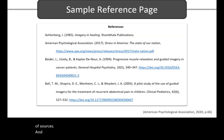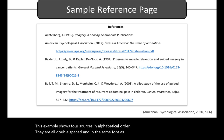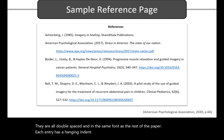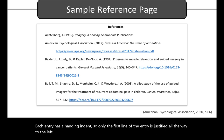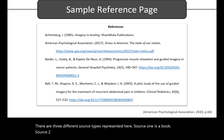And finally, this is what the entire references page could look like. This example shows four sources in alphabetical order. They are all double-spaced and in the same font as the rest of the paper. Each entry has a hanging indent, so only the first line of the entry is justified all the way to the left. There are three different source types represented here: source 1 is a book, source 2 is a website, and sources 3 and 4 are both articles in a scholarly journal.